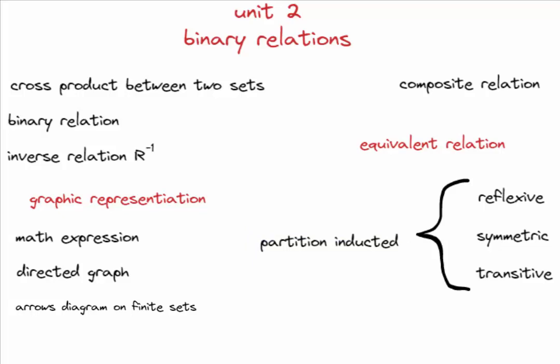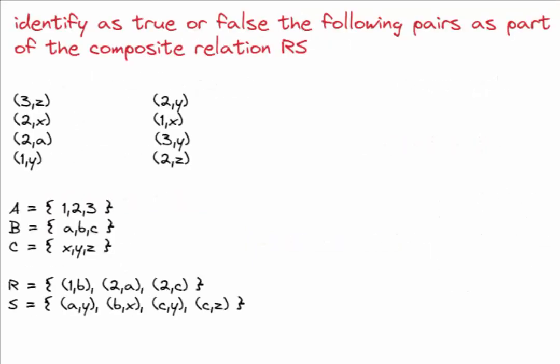So, let's get started with the test. Question 1. We have these 8 different pairs, and we have to mark as true or false, if they can exist as a subset of a composite relation between A, B and C.